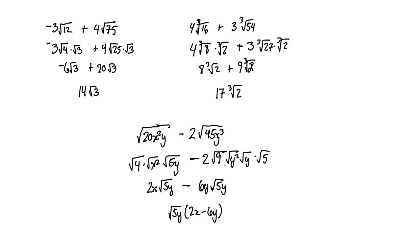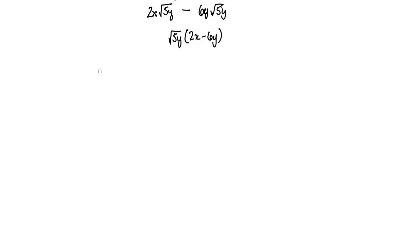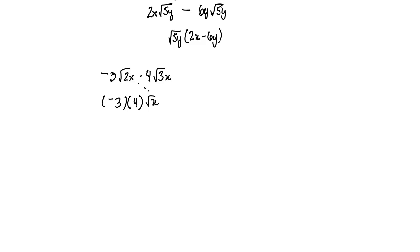Now let's do some multiplication. Let's try negative 3 root 2x times 4 root 3x. I'll regroup and reorder: negative 3 times 4 gives negative 12, and root x times root x gives x. That leaves us with root 2 times root 3, which is root 6. So the result is negative 12x root 6.